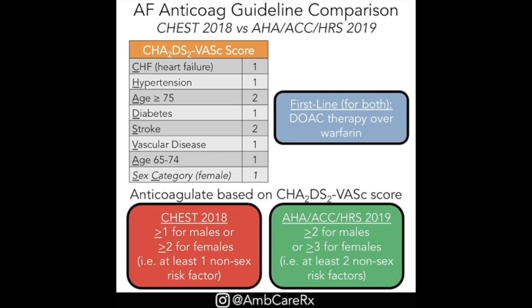CHADS-VASc anticoagulation risk stratification for non-valvular AFib: C — congestive heart failure (1 pt), H — hypertension (1 pt), A2 — age over 75 (2 pts), D — diabetes (1 pt), S2 — stroke/TIA/thrombus (2 pts), V — vascular disease/prior MI/aortic plaque/peripheral arterial disease (1 pt), A — age 65-74 (1 pt), Sc — female sex (1 pt). Maximum score: 9. Score 2+: moderate-to-high risk, recommend chronic oral anticoagulation. Score 1: lower risk, base on clinical judgment. Score 0: very low risk, no anticoagulation needed.